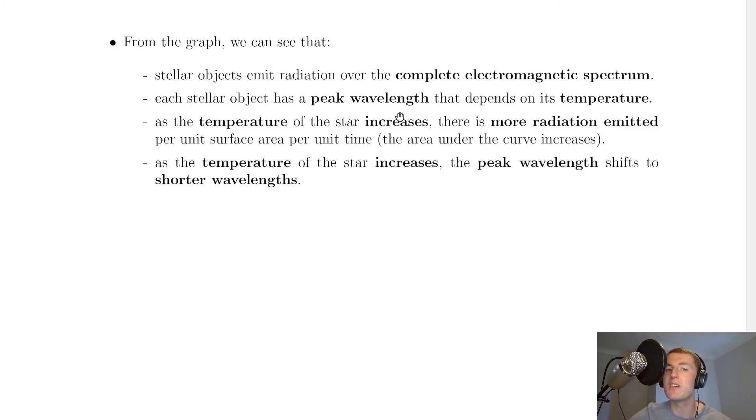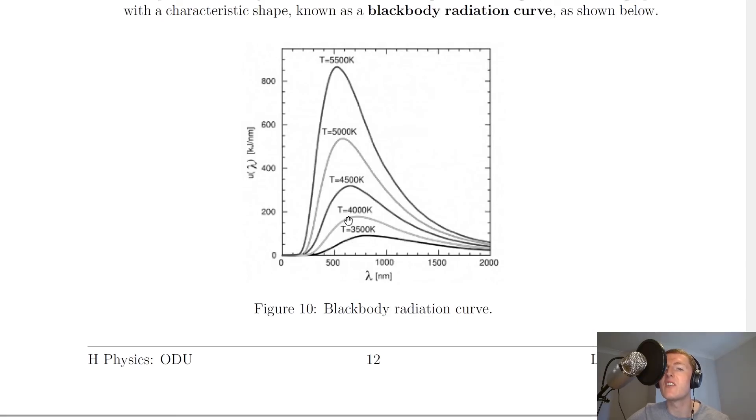The third statement here is that as the temperature of the star increases, there is more radiation emitted per unit surface area per unit time, i.e. the area under the curve increases. That's something we've already seen. So if we look back to the graph, you'll see the area under each curve increases for increasing temperature.